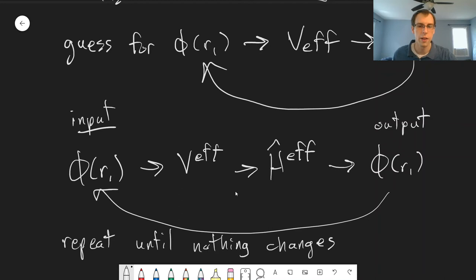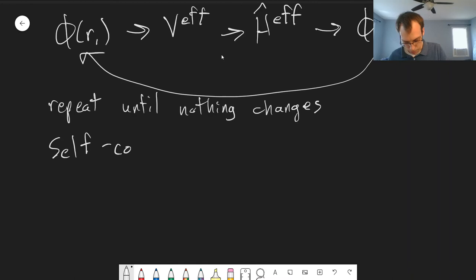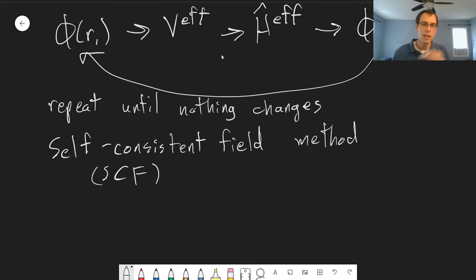And so this process is called the self-consistent field method. And so the problem is considered self-consistent, it doesn't change this field, this average electric field. This is SCF, self-consistent field method. So we keep doing this until nothing changes, and the problem is self-consistent with itself.